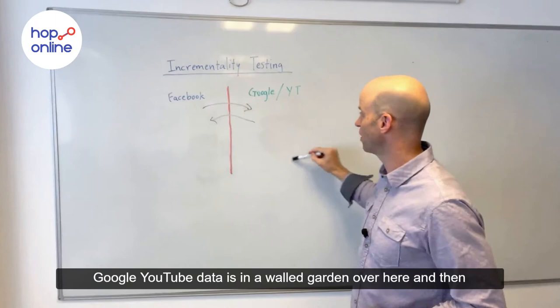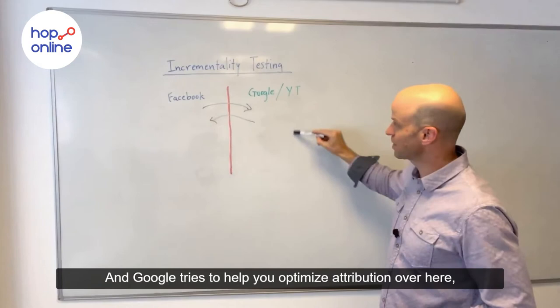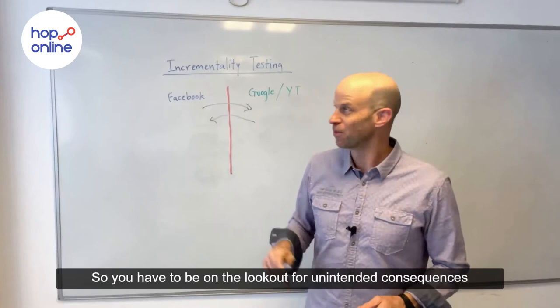Facebook tries to help you optimize attribution on their side, and Google tries to help you optimize attribution on their side. But crossing that firewall is next to impossible. So you have to be on the lookout for unintended consequences across the firewall.